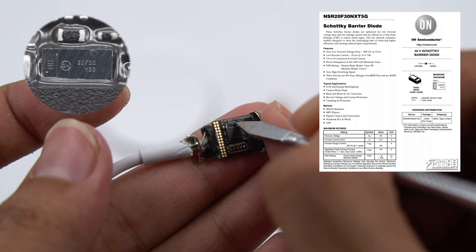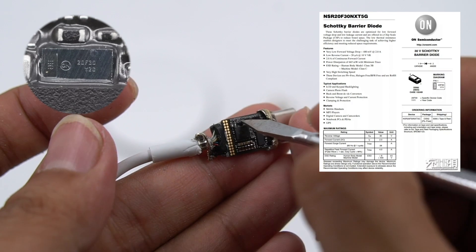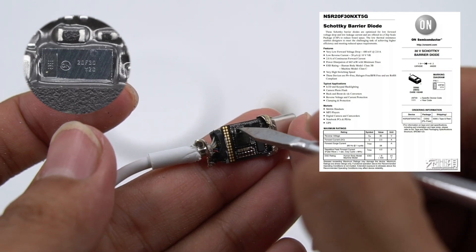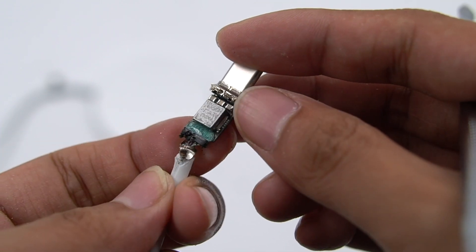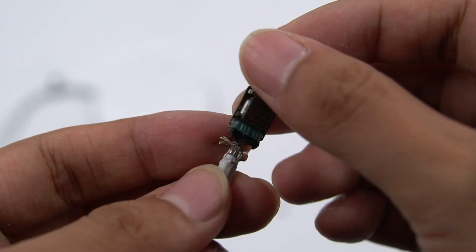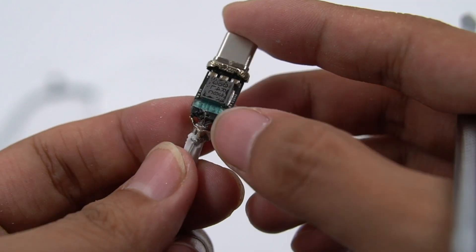The Schottky diode next to it comes from ON Semiconductor and is used to improve conversion efficiency. This alloy inductor is used for boosting. It can be seen that this product is very high-quality, because the input design is so complicated.